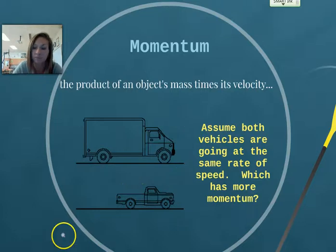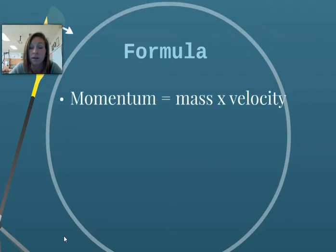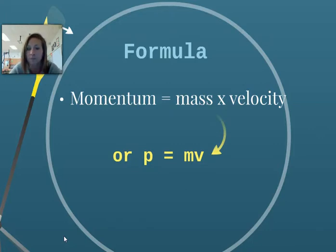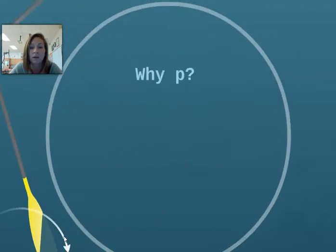The formula for momentum is mass times velocity, in other words, written as P equals M times V. So P is a variable for momentum. The units we use to measure mass are kilograms, and velocity is meters per second. Put those two together, and the units for momentum are kilograms times meters per second.